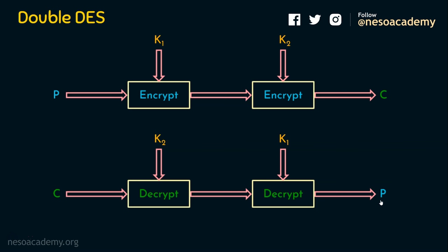Do you think that double DES will definitely enhance the security of DES? What we complained about DES is that the key size is small — 56 bits — so the key space is 2 power 56. Now in double DES we are using 2 power 56 plus another 2 power 56, so the key size is 112 bits. Do you think it has enhanced the security? If you think yes, then you are wrong. Double DES is vulnerable to an important attack: the meet in the middle attack.